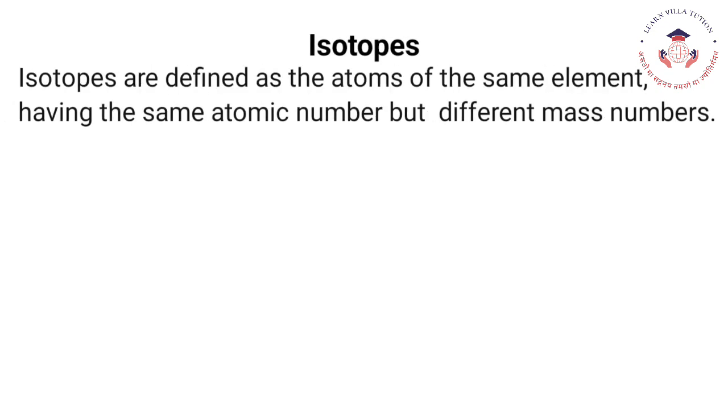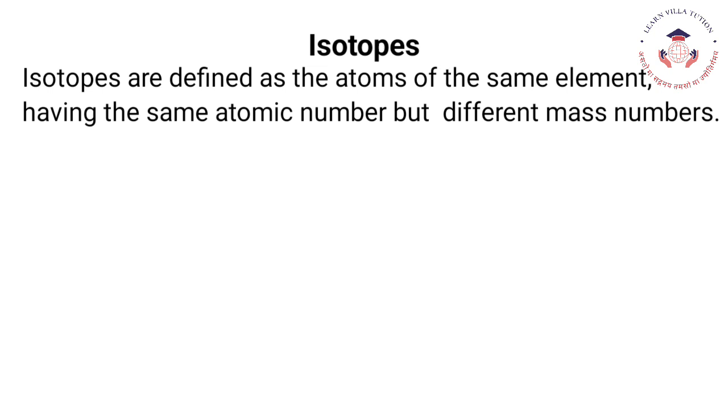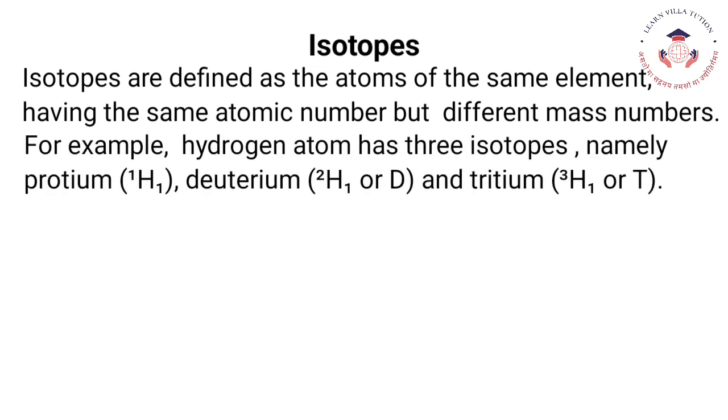Isotopes are defined as the atoms of the same element having the same atomic number but different mass numbers. For example, hydrogen atom has 3 isotopes, namely protium (¹H₁), deuterium (²H or D), and tritium (³H or T).